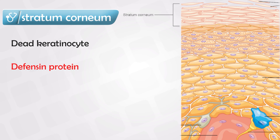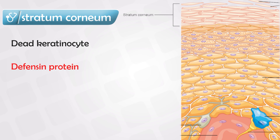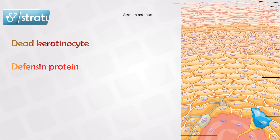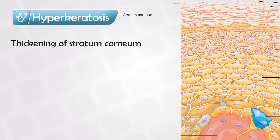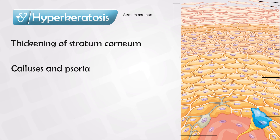This layer can become very thin or very thick depending on usage. In some areas like the lips, not much thickness is needed, so this layer will be thin. In areas with heavy repetitive movement, it will become callous and thickness will increase. If there is an increase in the stratum corneum layer, we call this hyperkeratosis — we see this in calluses and psoriasis.